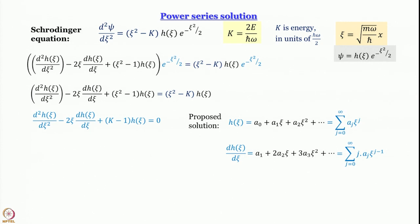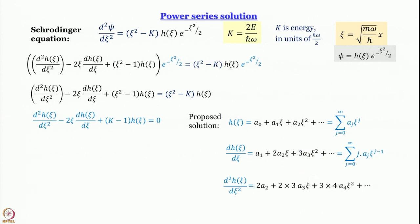With h written as a power series and dh/dξ obtained as another summation, differentiating once more gives d²h/dξ². The second term of the series gives 2a₂, the third gives 3·2·a₃·ξ, and so on. We write 2a₂ as 1×2·a₂ to identify the pattern. The next terms are 2×3·a₃·ξ and 3×4·a₄·ξ² and so on.